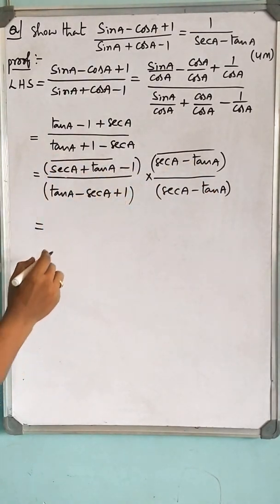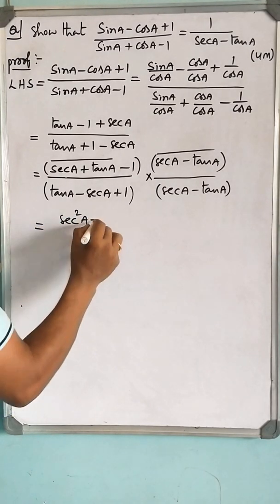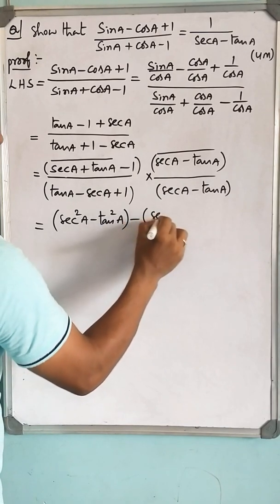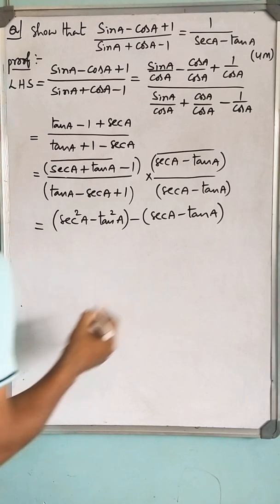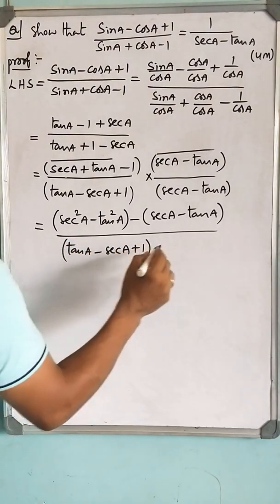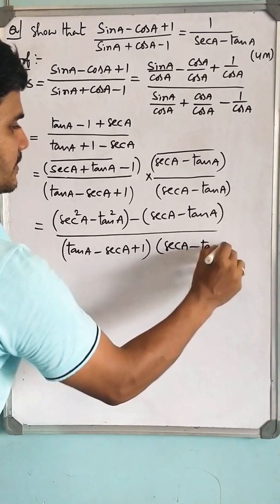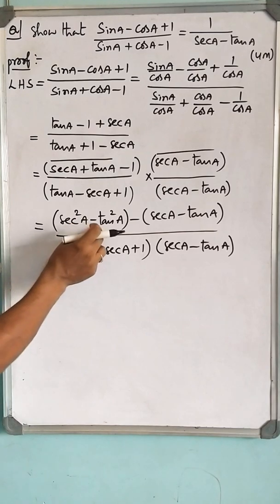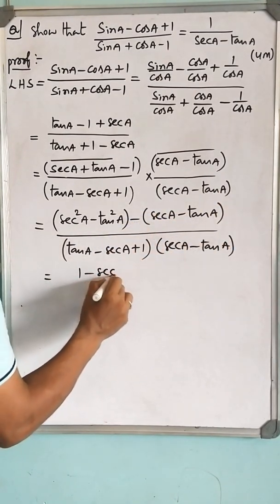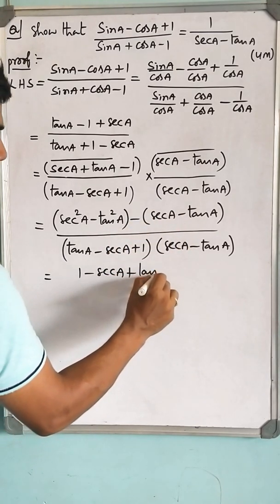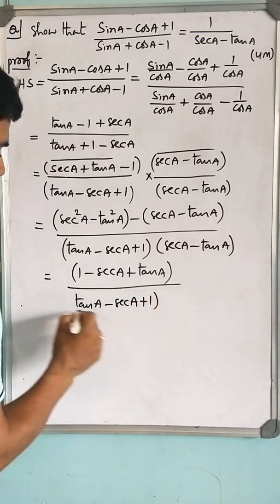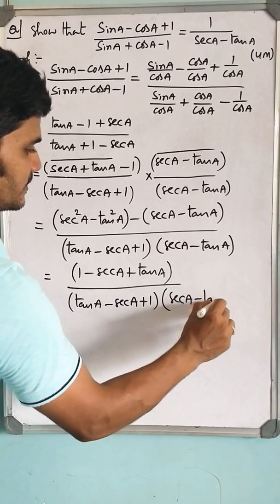So (sec A - tan A) into (sec A + tan A) becomes A squared minus B squared, that is sec²A - tan²A. Then multiplying again with this term, the denominator becomes (tan A - sec A + 1) into (sec A - tan A). Eliminating the bracket: minus into minus gives plus sec A, minus into minus gives plus tan A, over (tan A - sec A + 1)(sec A - tan A).